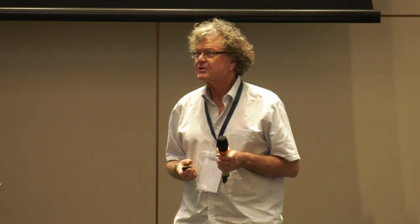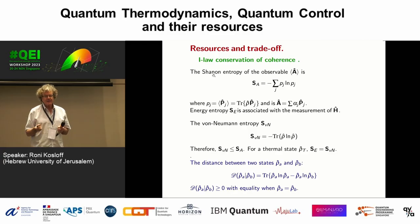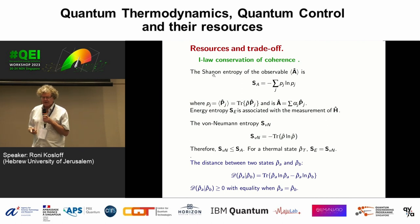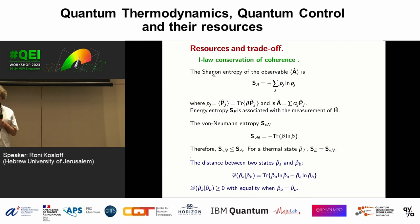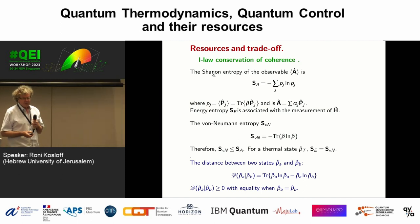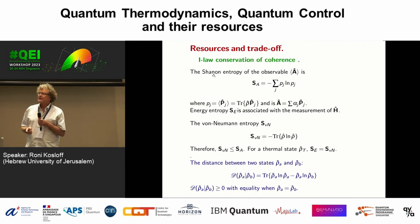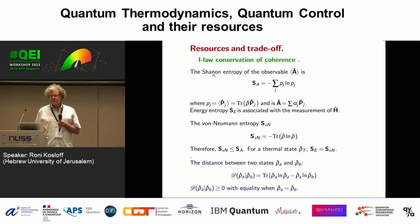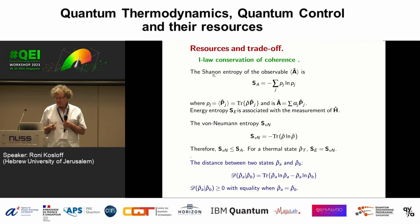Let's start from what I call resources trade-off. We have different types of resources and we can think about a trade-off between them. I want to start with entropy, starting traditionally with thermodynamics. I'm going to talk about the first law of thermodynamics in a slightly different context — the first law meaning conservation of coherence — and I'll prove that in a very simple way.